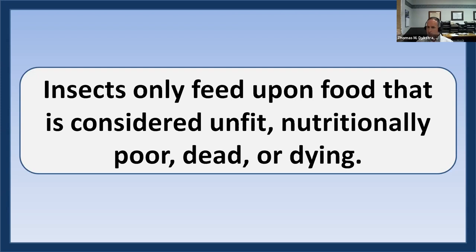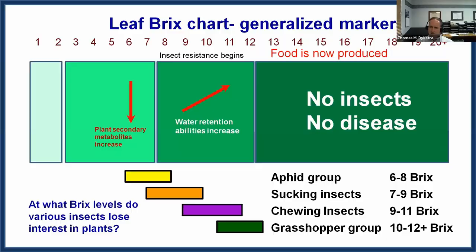I was under the impression there would probably be exceptions, but I have not found any over the past two decades. The only possible exception are nectar feeders, since many insects do prefer a good healthy plant for nectar. But if an insect is eating a plant — not nectar — it will be unfit, nutritionally poor, dead, or dying. That is the preference for all insects when attacking plants.